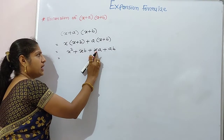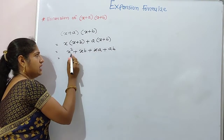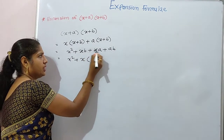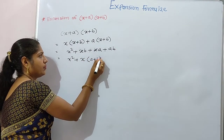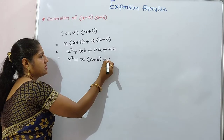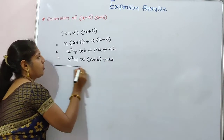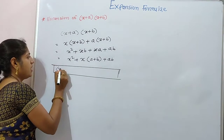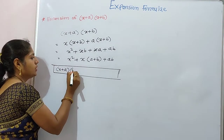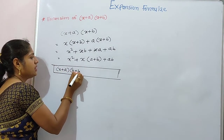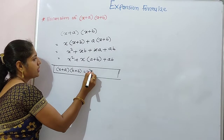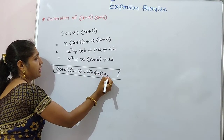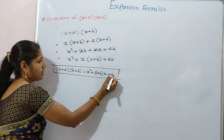Now, xb and xa — we take x as common — giving x times a plus b, plus ab. So our formula becomes: x plus a into x plus b equals x square plus a plus b multiplied by x plus ab.